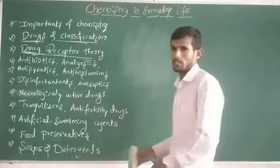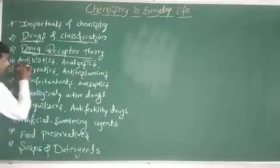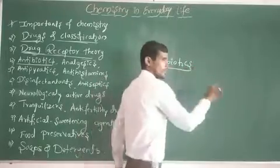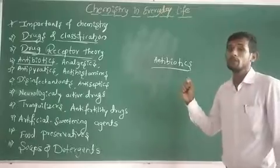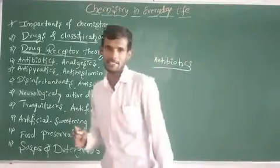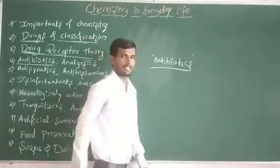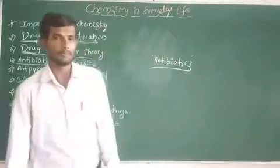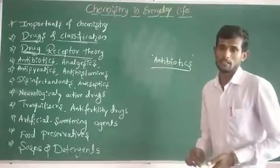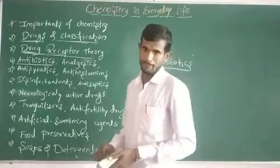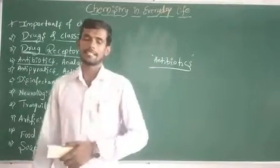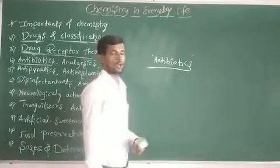Different types of drugs are observed. My first point: antibiotics. What are antibiotics? These are chemical substances which are derived from living cells and which prevent the growth of microorganisms. One very important antibiotic is penicillin, which is derived from Penicillium notatum.